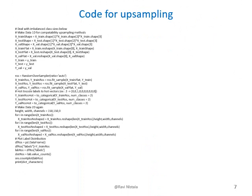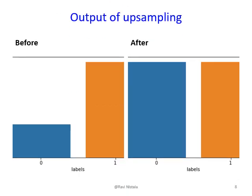The normal X-ray classes are not equal to the pneumonia classes. To make them equal, we apply upsampling as shown in this slide. The next slide shows the result of the upsampling — on the left side we see before upsampling and on the right side we see after upsampling of the two classes.